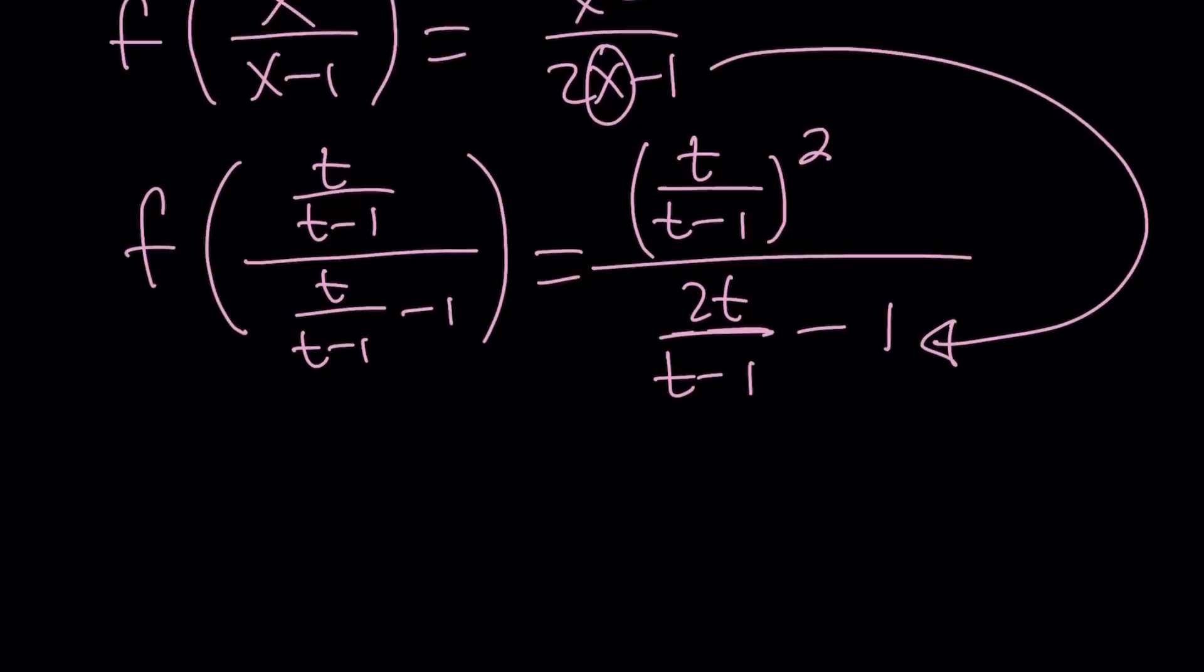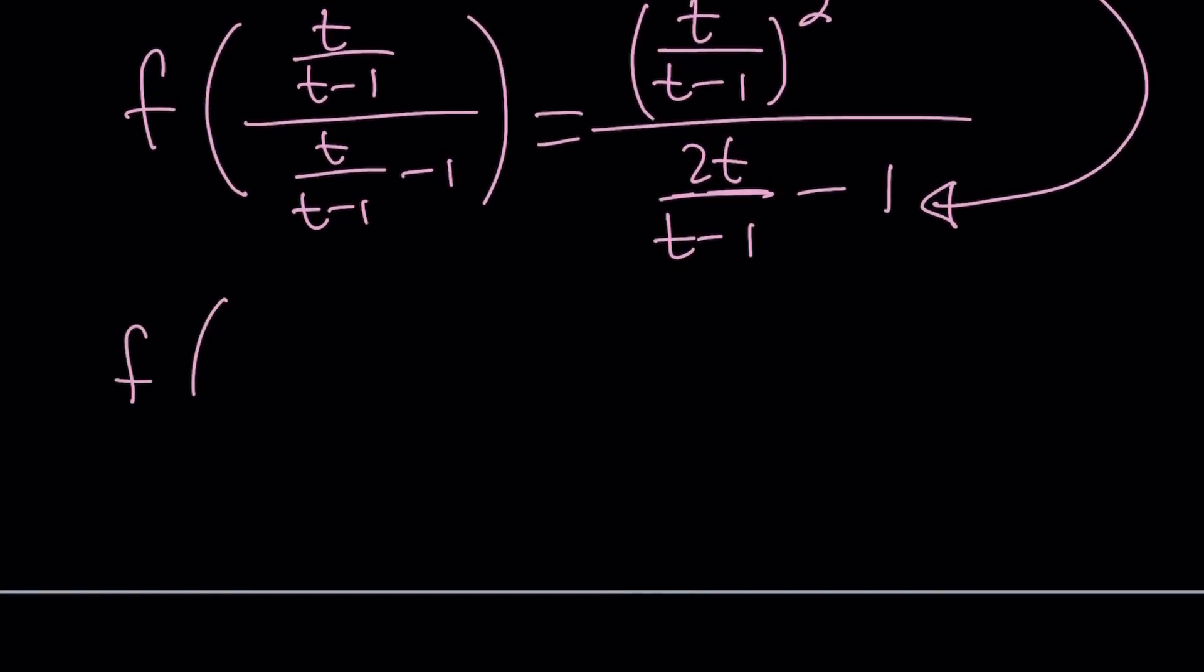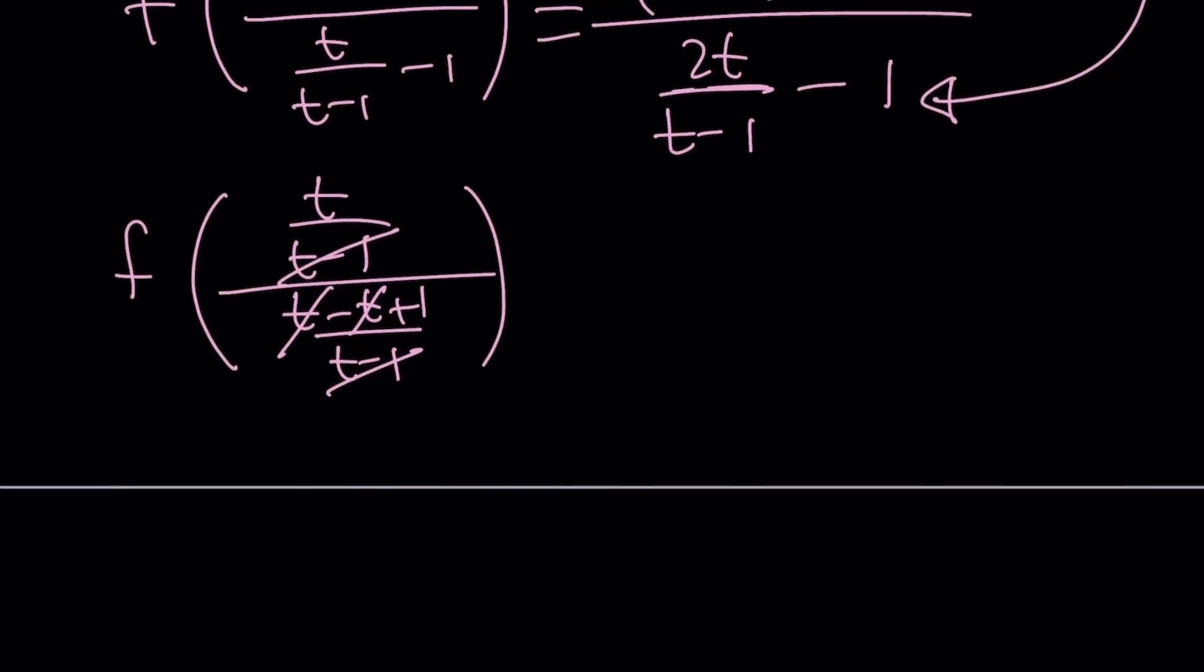Now, on the left-hand side, inside the parentheses, we have two expressions that have the same denominator. So, they're going to cancel out. This is going to be t minus t plus 1 over t minus 1. t cancels out. We get 1 over t minus 1. t minus 1 cancels out. We get f of t over 1, which is, obviously, f of t. That's how we got it. So, the left-hand side should not be surprising. It gives us f of t.